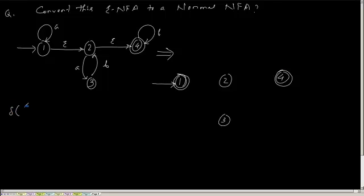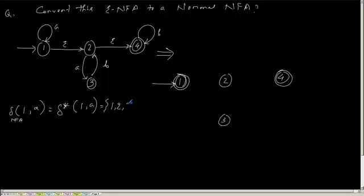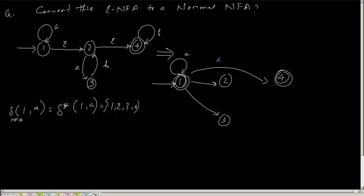Delta of (1, a) for the new NFA equals delta-star of (1, a), which we have already seen gives {1, 2, 3, 4}. So I will create transitions from state 1 with input 'a' to each of those states: to 1, to 2, to 3, and remain at 4 — all labeled 'a'.